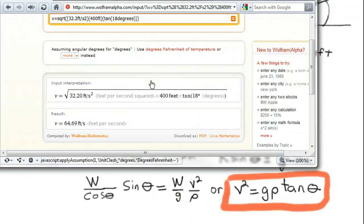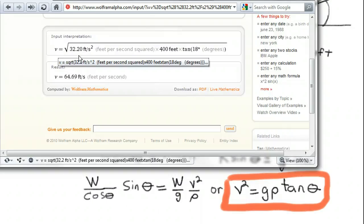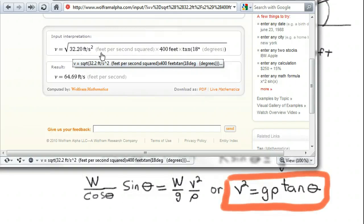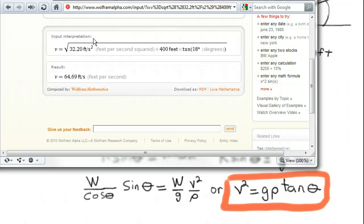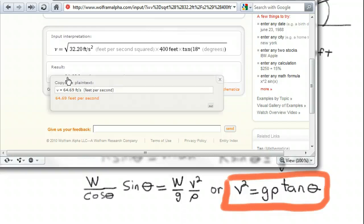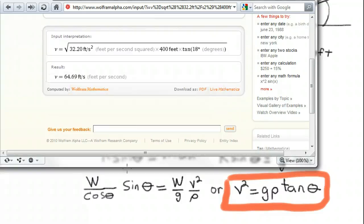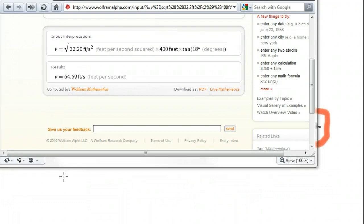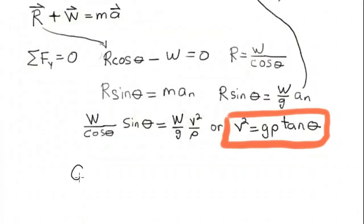Oh, great. It looks like it worked. So here it tells you what it interpreted my input as. v equals the square root of this entire value, which is just what I wanted. 32.2 feet per second squared times 400 feet times the tan of 18 degrees. And here is the result. 64.69 feet per second. That's great. I can click on that. Let me first write this down on our solution. 64.49 feet per second.